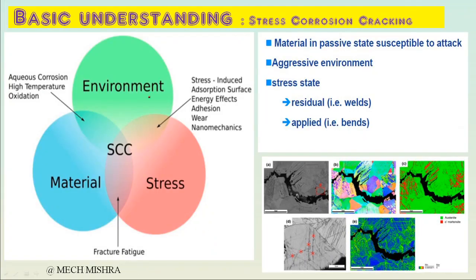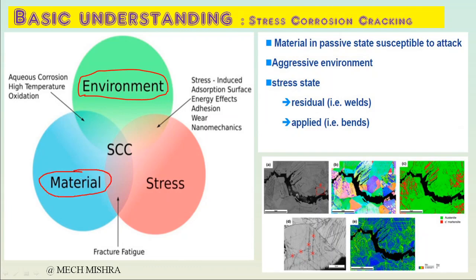So first, what is chloride stress corrosion cracking? It's a combined effect of three things. First is the environment - there should be a susceptible environment for stress corrosion cracking to occur. It's a cracking phenomenon caused by a combination of stress, then there should be a susceptible metallurgy - the material should be of such a type which can cause stress corrosion cracking - and finally the stresses in the material, which may be residual or applied.